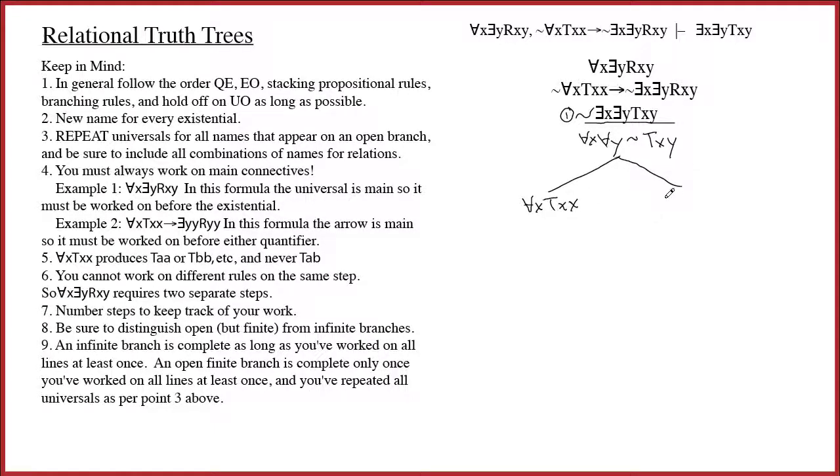Then on the other side you're supposed to put the consequent as is, so that would be not there is an x, there is a y, r, x, y. Okay that was step number two. Well with relational trees it's oftentimes appropriate to think of it as dividing into separate projects, and so now I've got these two sides to work on.